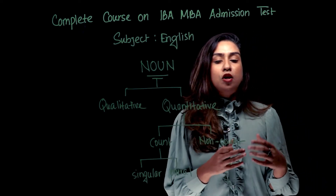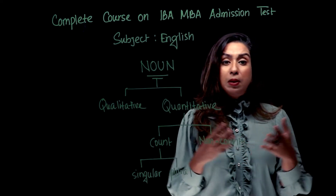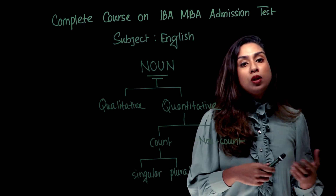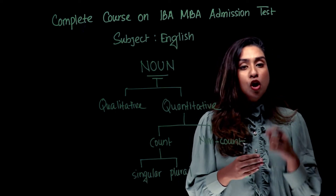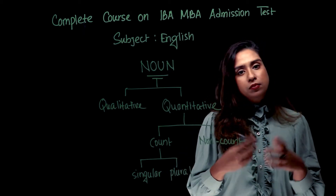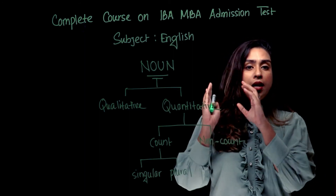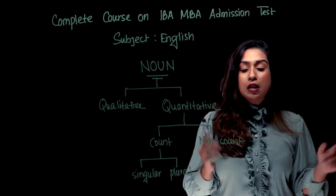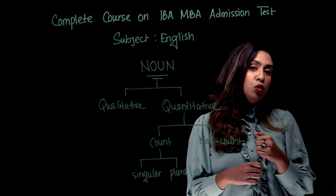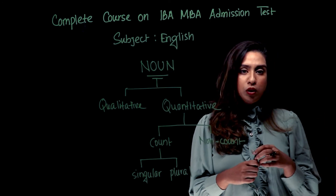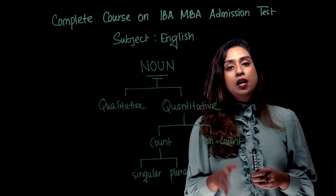Non-count nouns — you cannot go 1, 2, 3, 4 or apply an S. For example, you cannot say 'one tea' or 'one sugar.' The exceptions are not possible. So we need a special way to make these words plural. Tea is a wonderful drink — we have not specified anything particular, just the general concept.